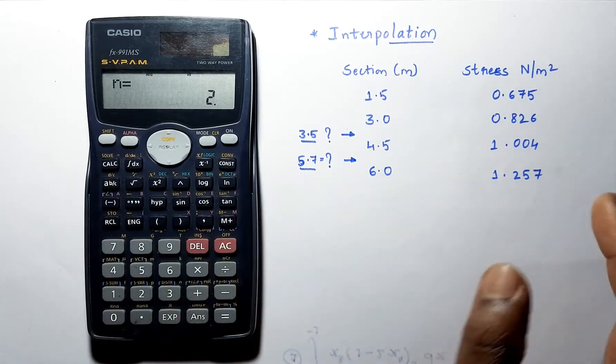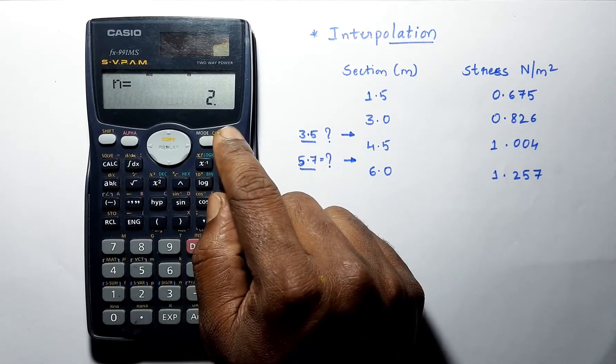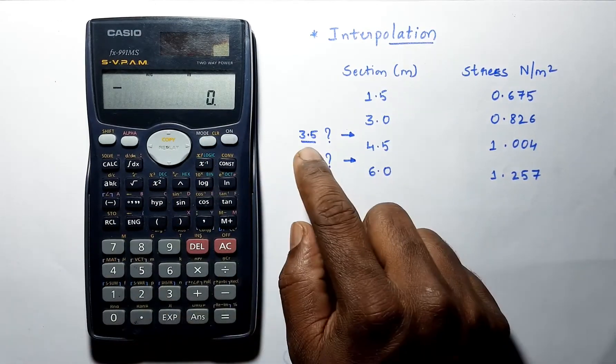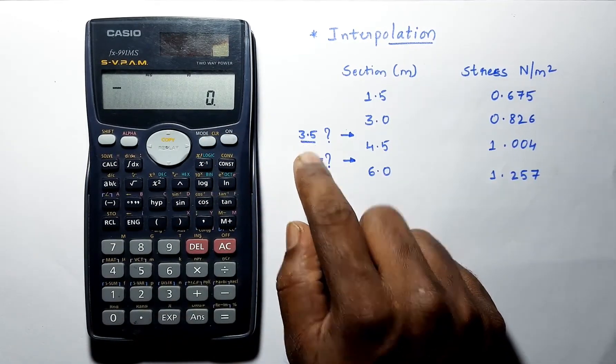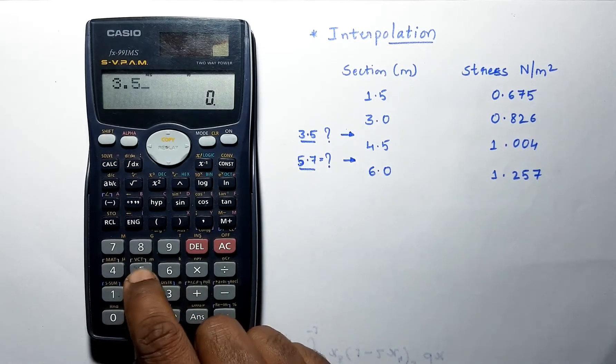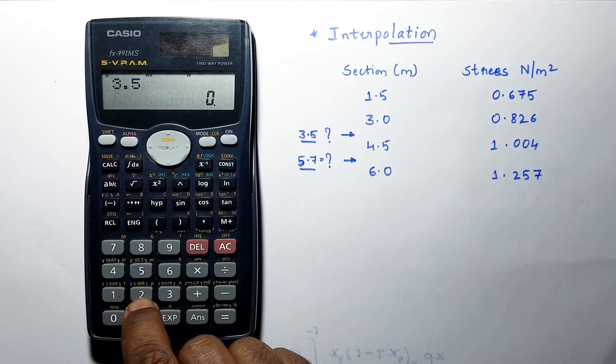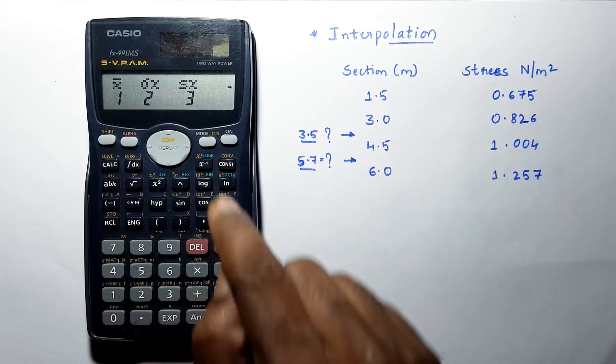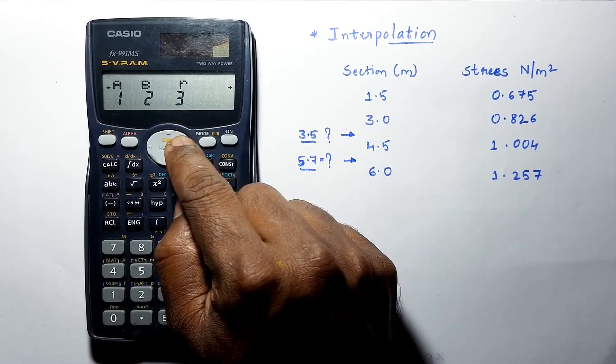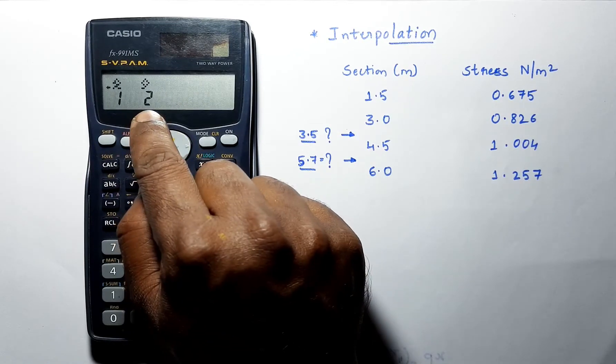Now this data is stored in calculator. Now to find out for 3.5 meters, just press 3.5 and press shift 2. It will show some symbols now. Now go at the last and select this symbol.